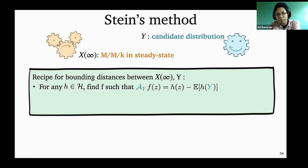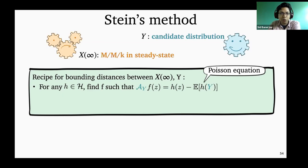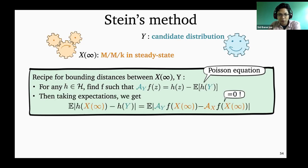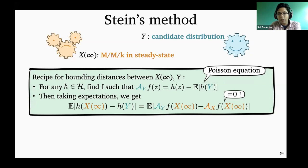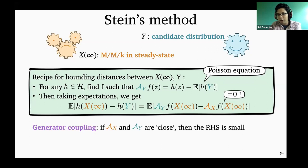Why is this useful? We can take expectation on both sides. Setting Z as x infinity, we get on one side the expected value of H(x infinity) − H(y). On the other side, we have the operator A_y applied to F(x infinity). For free, we can subtract the operator A_x applied to F(x infinity), because that's the characterizing operator for x infinity. And now if these two operators happen to be close, then we can control the right-hand side.